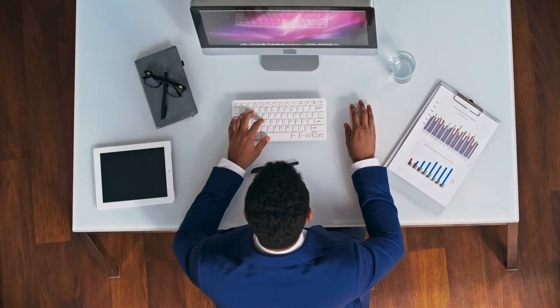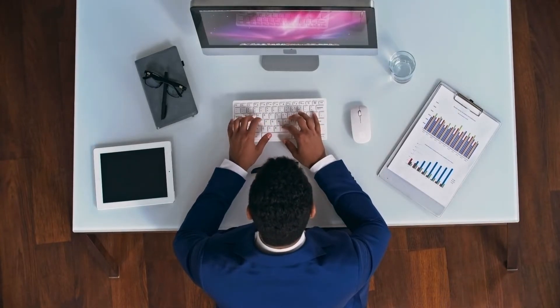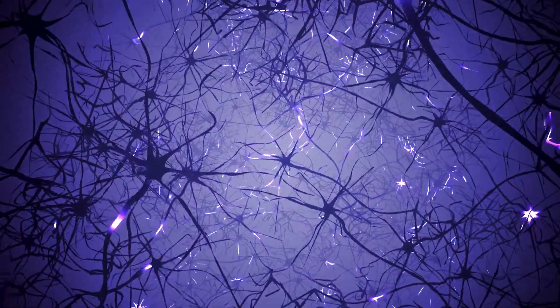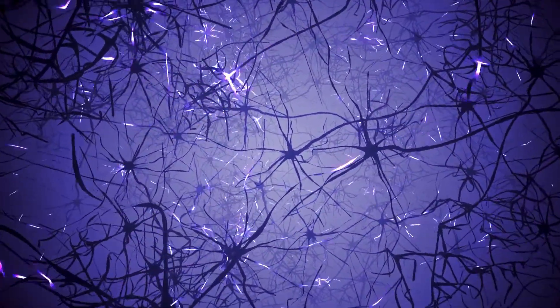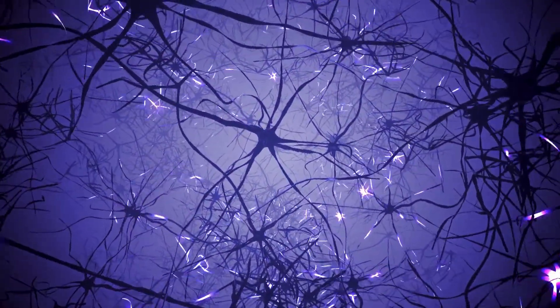So how does DeepSeek actually work? At its core, DeepSeek uses neural networks, a system inspired by the human brain. These networks are trained on massive datasets, allowing the AI to learn and improve over time. The more data it processes, the smarter it gets.